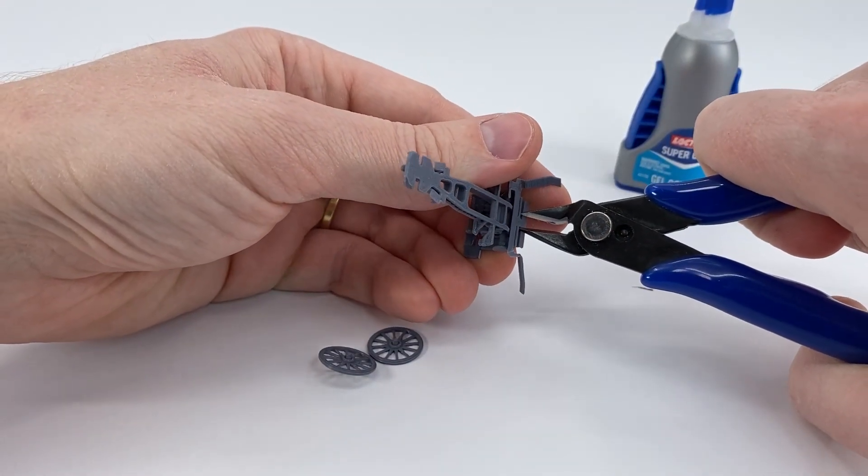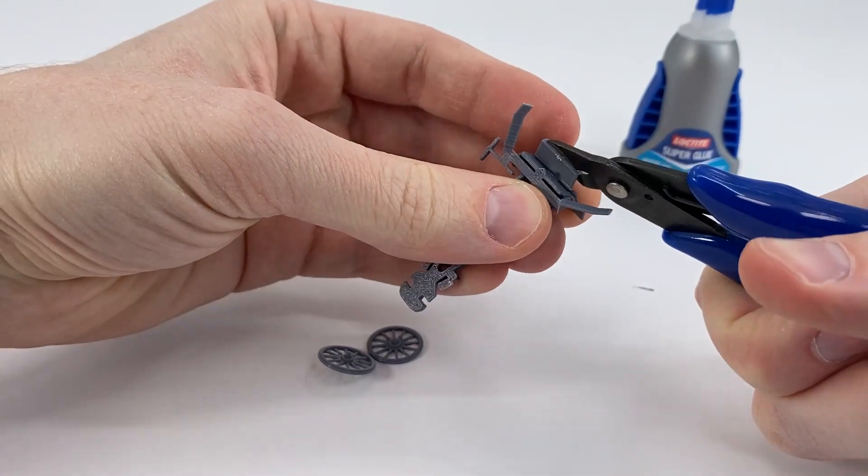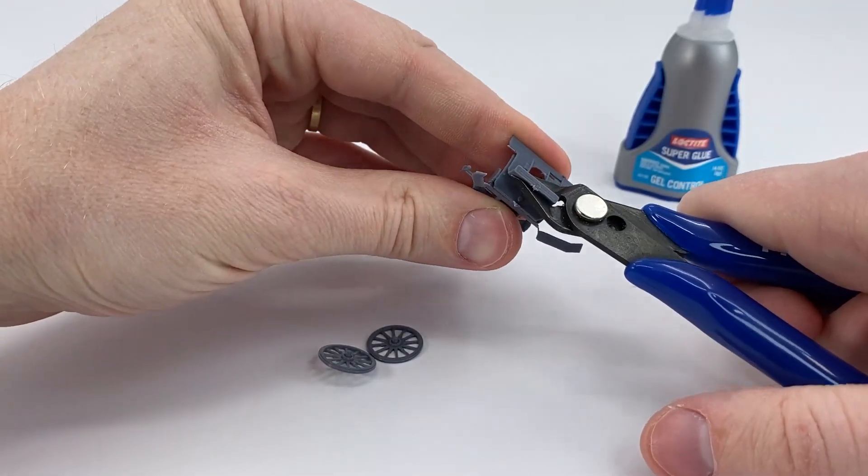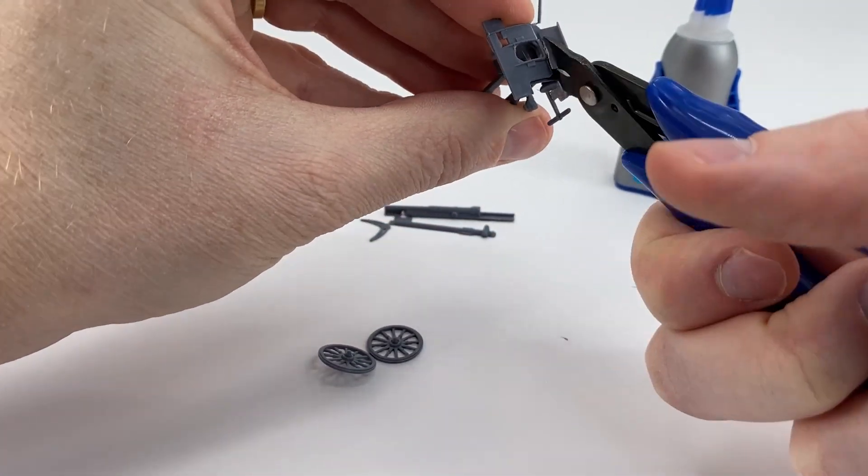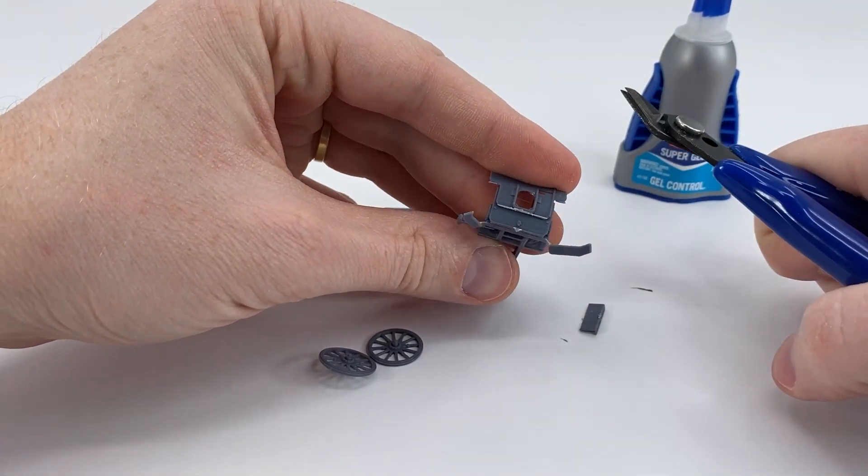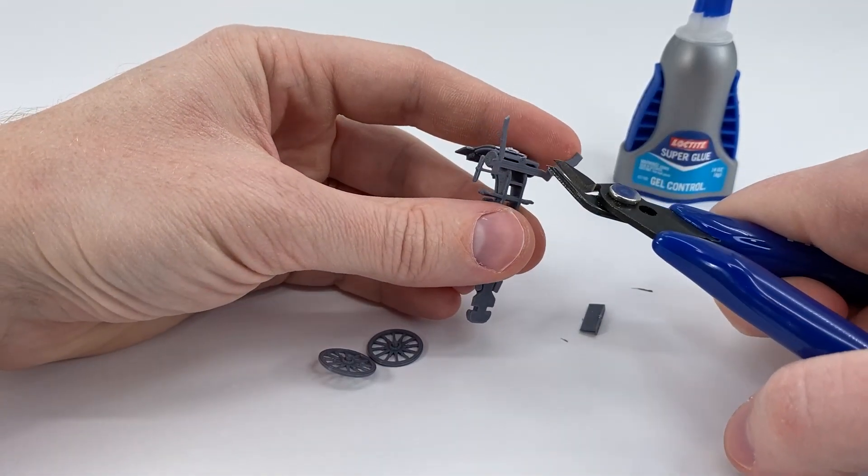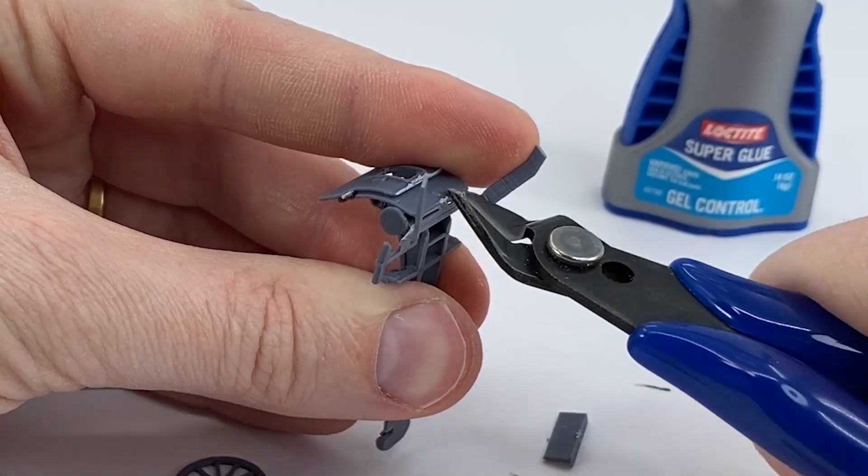Go ahead and cut like that, and then you can just take this whole piece and kind of peel it off like this. You see how that worked? That is good. Then clean up the sprue mark right there.